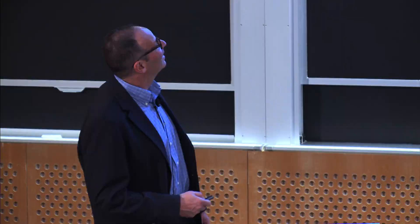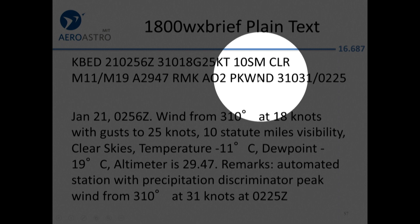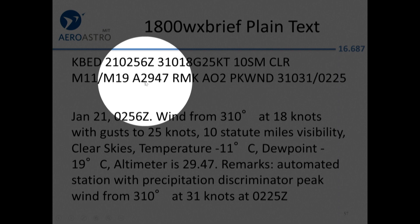Just like aviationweather.gov, they'll give you the METAR. Here's one for Bedford from the 21st. The wind was 310, at 0256 Zulu — late at night. Wind was 310 at 18 knots gusting 25, 10 miles of visibility, clear. Temperature was minus 11, dew point minus 19, altimeter 29.47. And there's a remark: peak wind was 310 at 31 knots, which happened at 0225 Zulu time.